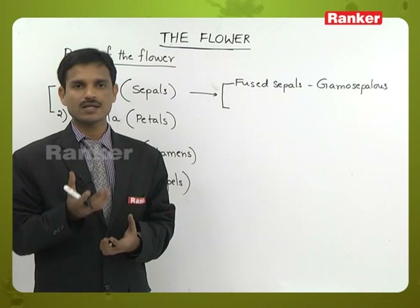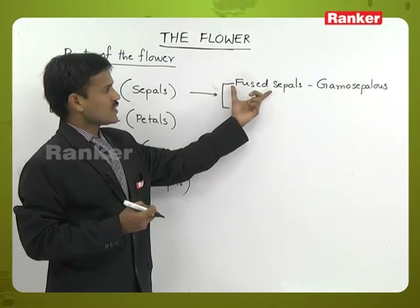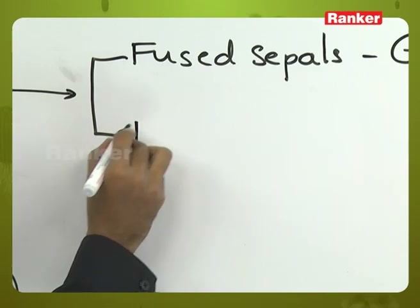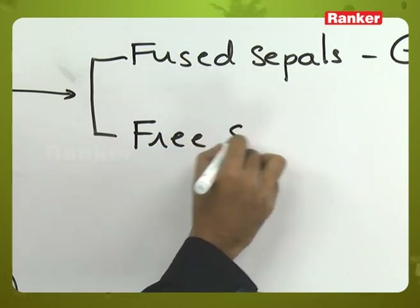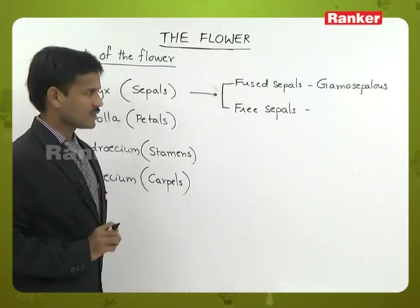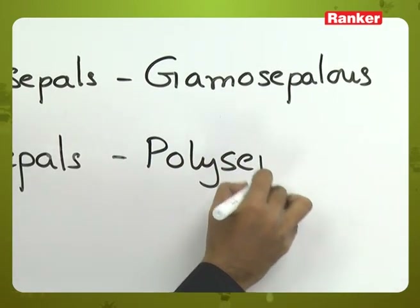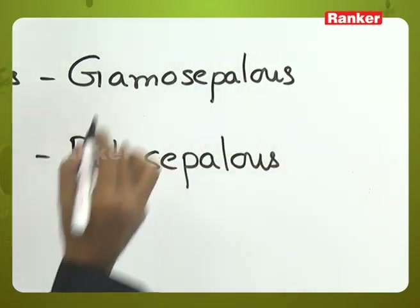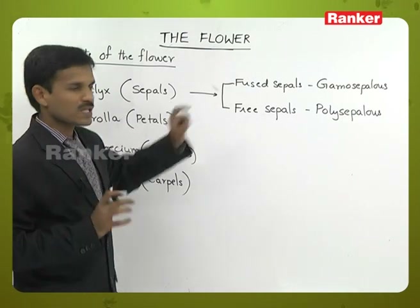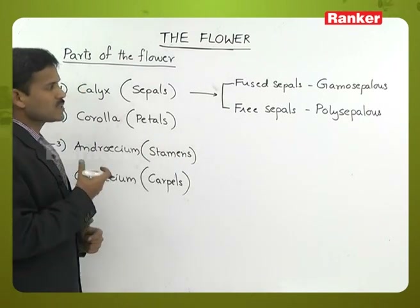A number of sepals are present depending on the species. When the sepals are fused, it is called the gamosepalous condition. When the sepals are free — not attached, not fused — that condition is called polysepalous. So gamosepalous indicates fused sepals, and polysepalous indicates free sepals.